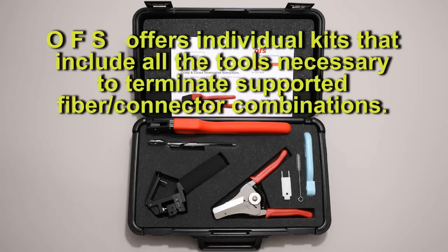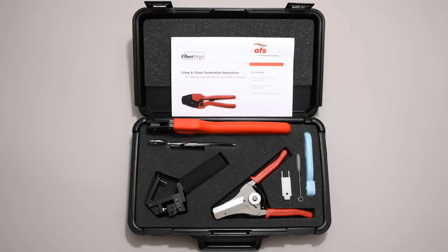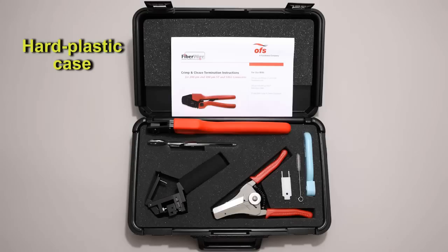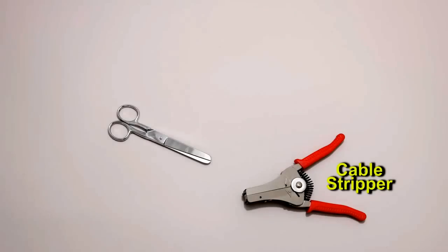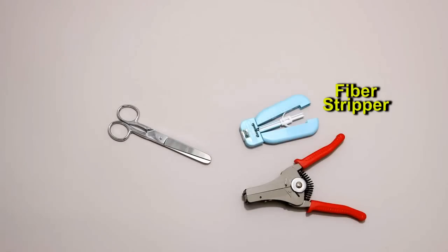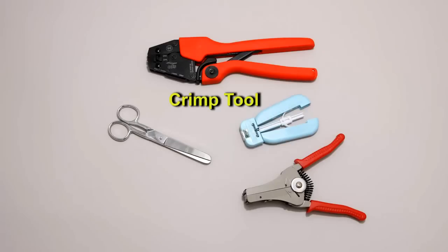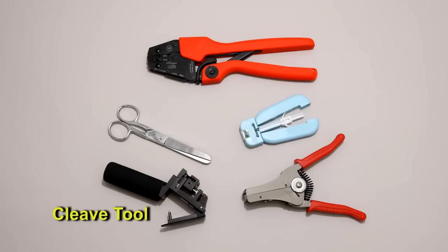OFS offers individual kits that include all the tools necessary to terminate supported fiber connector combinations. Each kit is packaged in a portable hard plastic case and includes printed instructions, scissors capable of cutting aramid yarn, a cable stripper to remove the cable's outer jacket, a fiber stripper to remove a portion of the cladding, a crimp tool to affix the connector onto the cladding, and a diamond cleave tool to provide a clean finished end of the fiber.